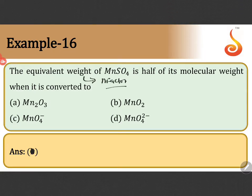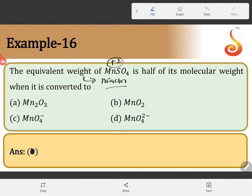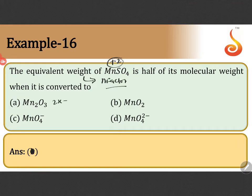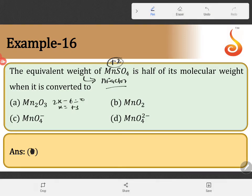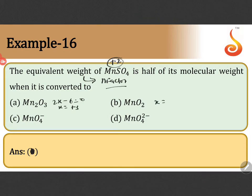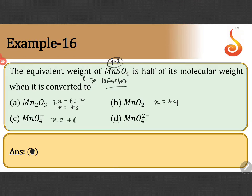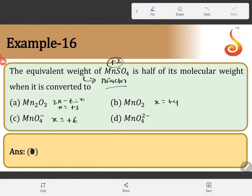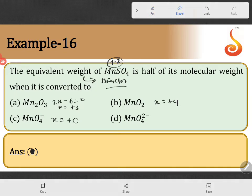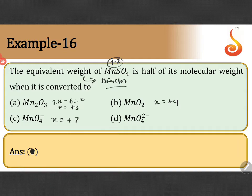So here manganese is plus 2 oxidation state. Here manganese is 2x minus 6 equal to 0, x equal to plus 3. Here x equal to plus 4. Here x equal to plus 6. Sorry, plus 7. Here x equal to plus 6.